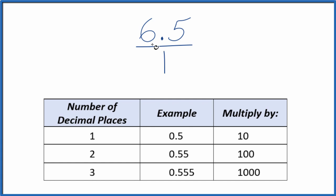We need to get this 6.5 to be a whole number. The way we can do that, since we have just one decimal place here, we can multiply it by 10. So when we multiply the numerator, the 6.5 times 10, that gives us a whole number, 65.